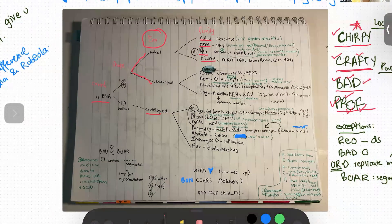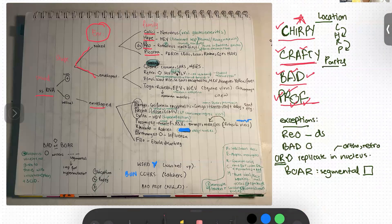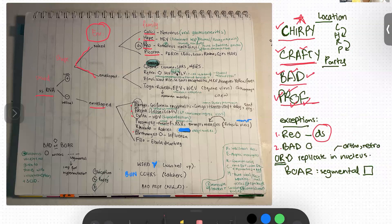Now the exceptions: Ryo is boxed and marked DS because it is the only RNA virus that is double-stranded — that's our first exception. The BAD viruses — Bunya, Arena, and Delta — are circular. And the OR viruses — Orthomyxo and Ryo — replicate in the nucleus, as signified by the diamond shape I have drawn.